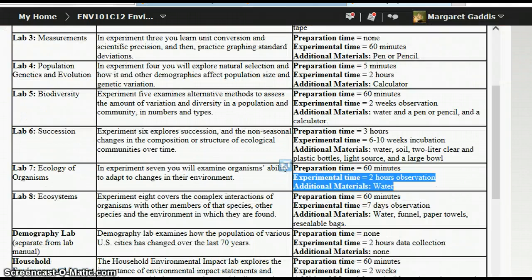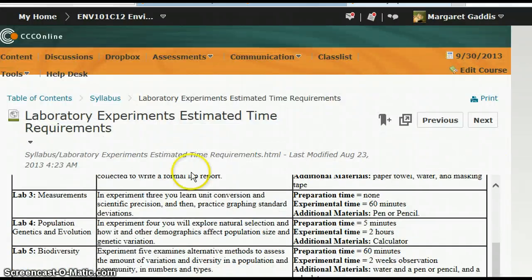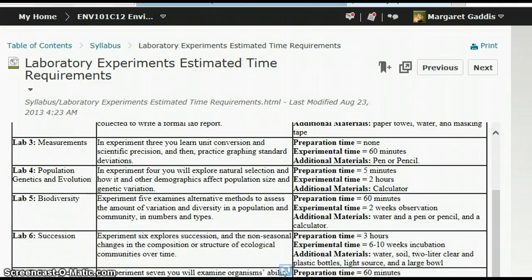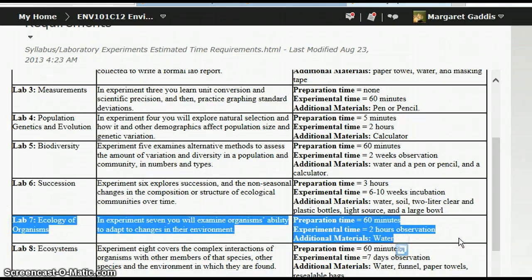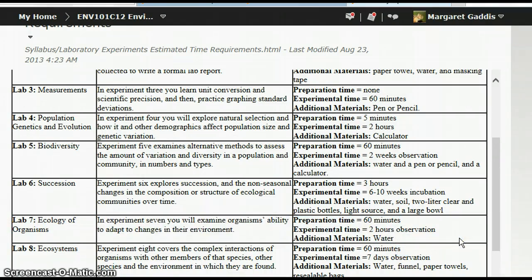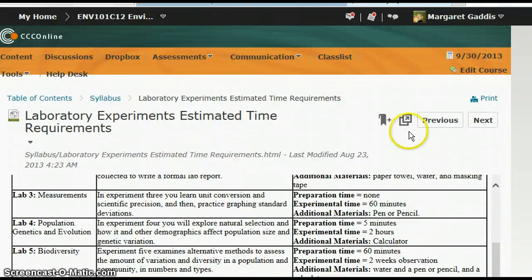Another great page you could have in there is the laboratory experiments estimated time requirements. This page will help you stay on track of how much time you need to set up an experiment and what other additional materials you might need that aren't in the kit. So for lab 7, Ecology of Organisms, you need about 3 hours total to complete this lab.